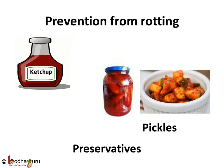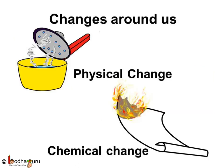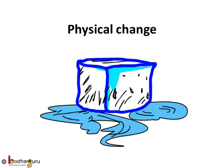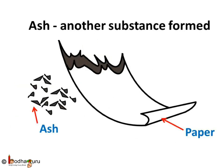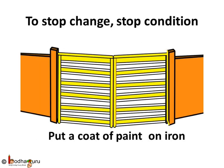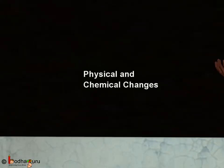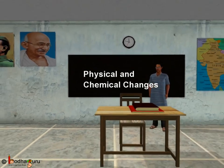Understand and stop the condition of a change if you don't want that change to happen. To summarize: changes can be of two types — physical and chemical. Physical changes are changes in the physical properties of substances; no new substances are formed and these changes may be reversible. But in chemical changes, new substances are produced. A chemical change is also called a chemical reaction. Changes keep happening all around us, and to stop undesired changes, we can stop the condition which causes them. That's all in this video. Bye-bye, children!